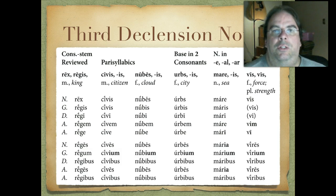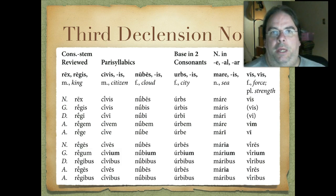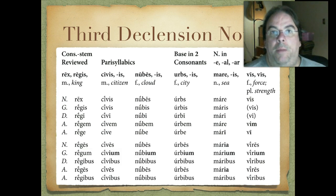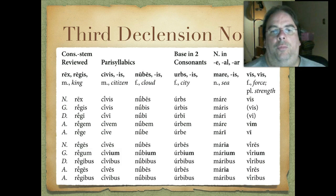We'll notice the same thing in this other example. We have nubes, nubes. Declining: nubes, nubes, nubi, nubem, nube — just like we would have expected. Then the plural: nubes, nubium, nubibus, nubes, nubibus. So in the genitive plural, we have that extra I.